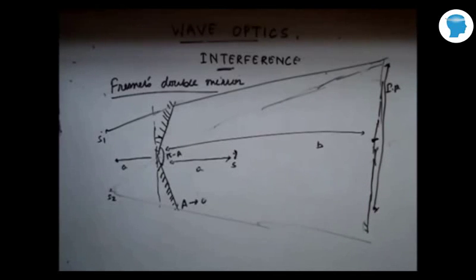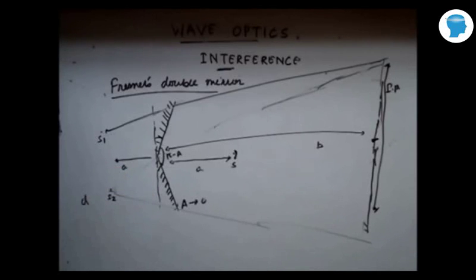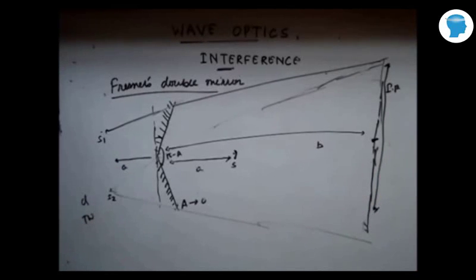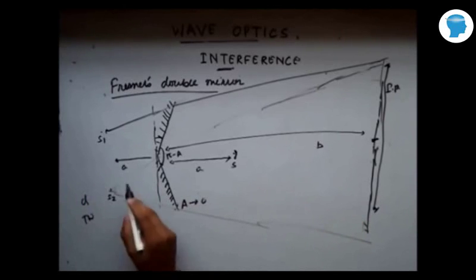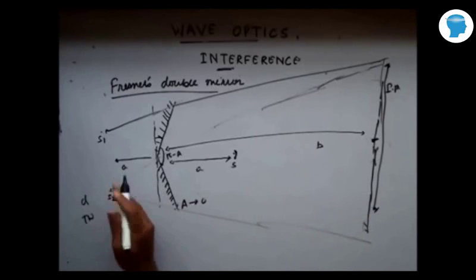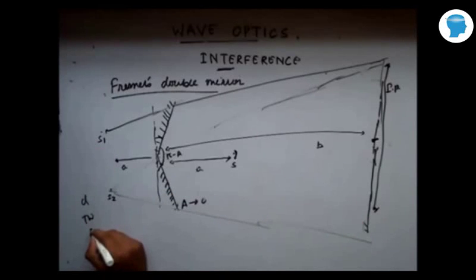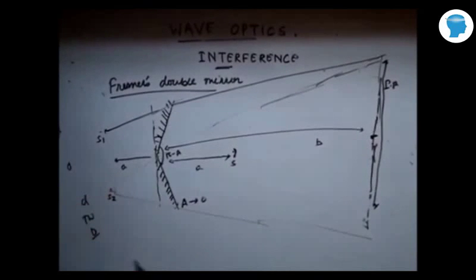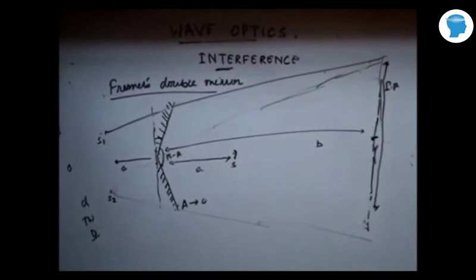The question is: find the distance between the virtual slits, that is D, find the total width of the interference pattern TW, and find the distance between the slit and the screen, that is capital D. To find D and the fringe width, let us do some geometric construction.